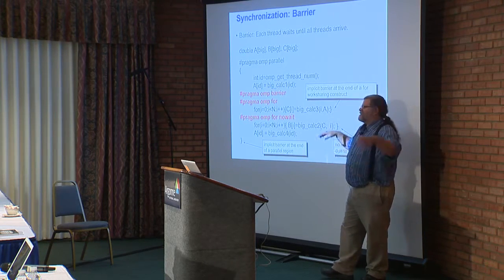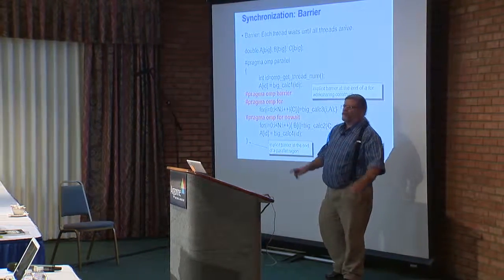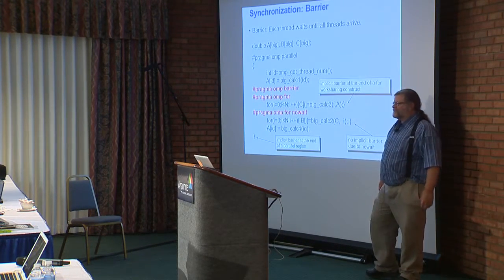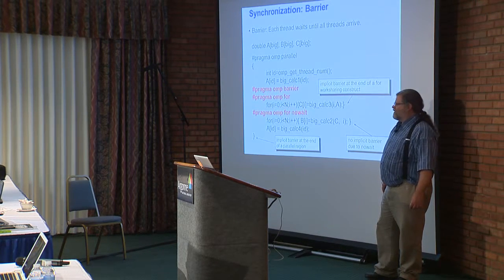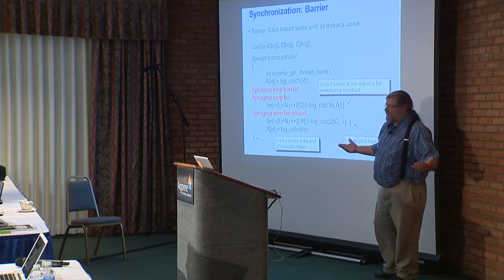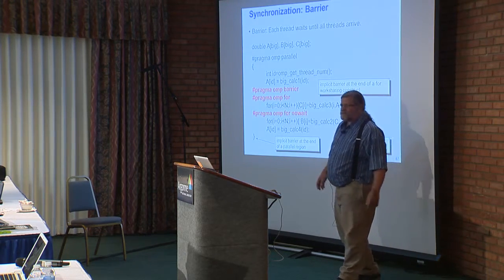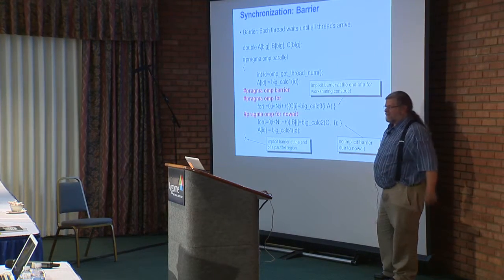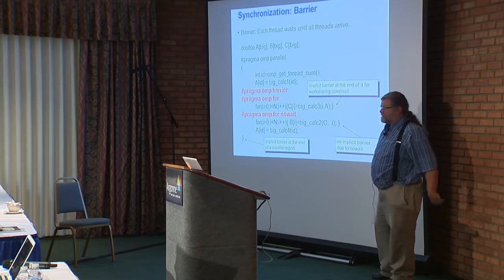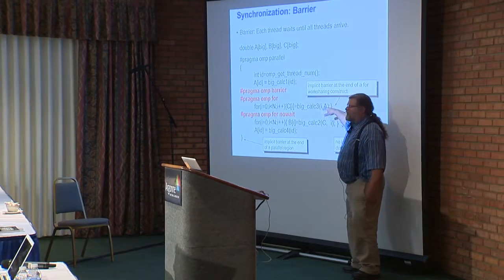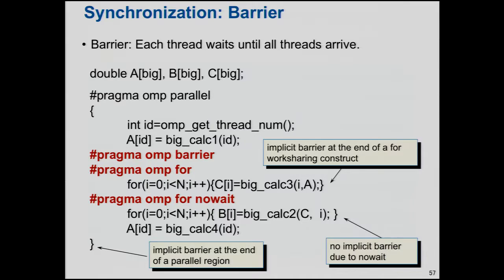We want OpenMP to be safe by default. We're trying to be the friendly, high-level programming model for application programmers. I always get a kick out of it when people criticize OpenMP for being too low level — have you written P threads or C++11 threads? Talk about low level. We're the high-level easy stuff. And yes, it gets difficult, but that's because parallel programming is not easy. We imply a barrier because that's the safest thing to do.